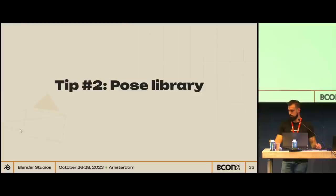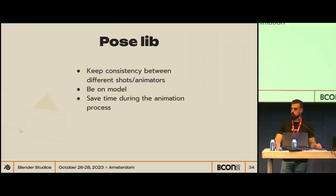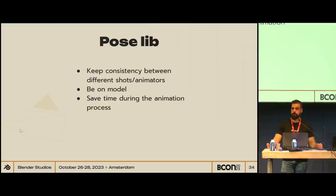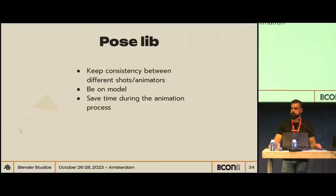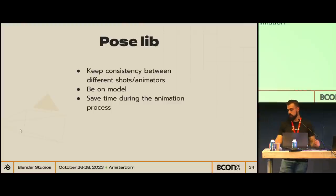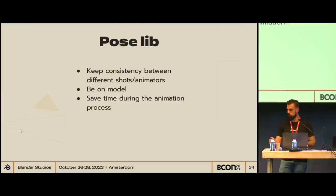Tip number two is the pose library. The pose library is really important for keeping consistency between different shots and different animators. Each animator has their own style, so you need to unify it because the character needs to be the same character across the whole film. The pose library helps with that and also serves as a model. It's difficult to keep a character consistent across different animators, and most importantly it saves a lot of time during the animation process — it's easier to mix and apply poses than to recreate a lot of controllers.